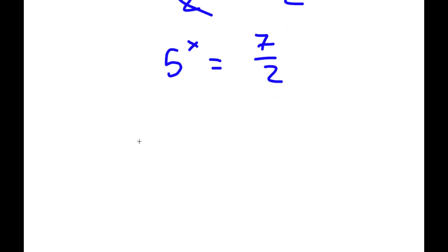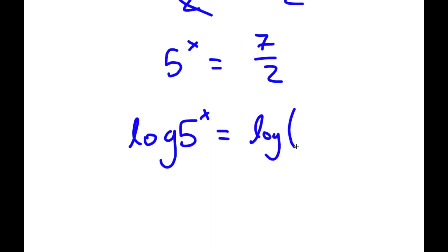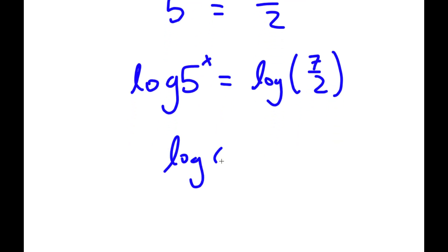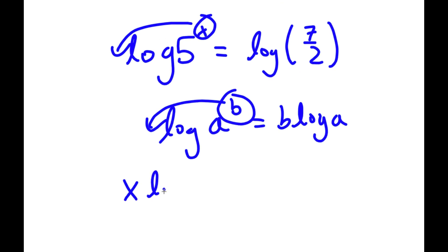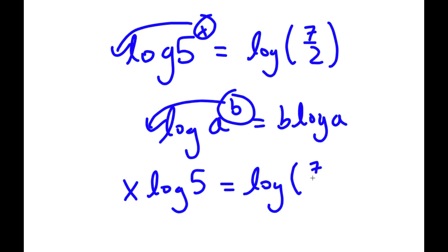Now to solve this, I'm going to take the log on both sides. So I have log φ to the power of x is equal to log 7 over 2. And if I have something in the form log a to the power of b, I can move my exponent b to the front, so I get b times log a. So in this case, I have log φ to the power of x, so I can move x to the front, and I get x times log 5 is equal to log 7 over 2.